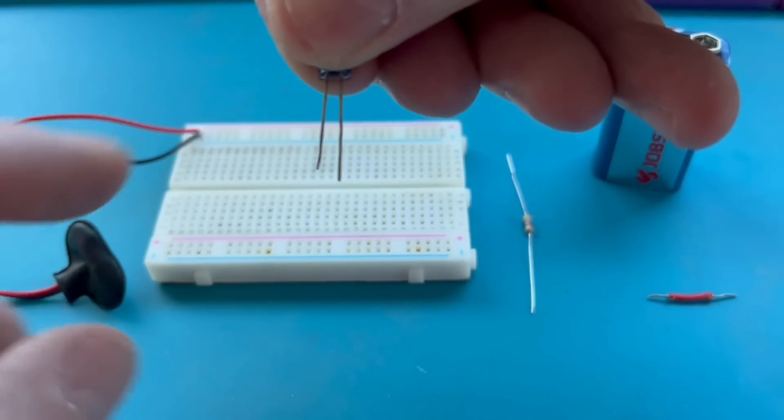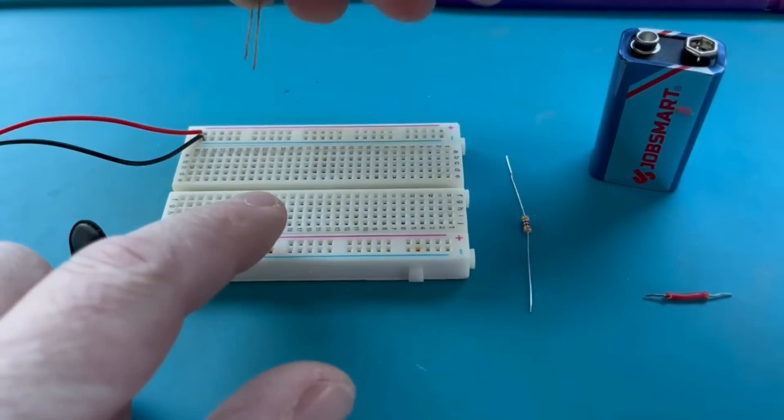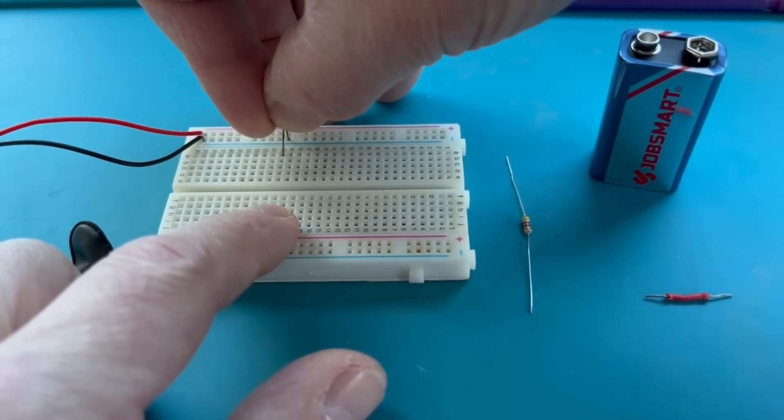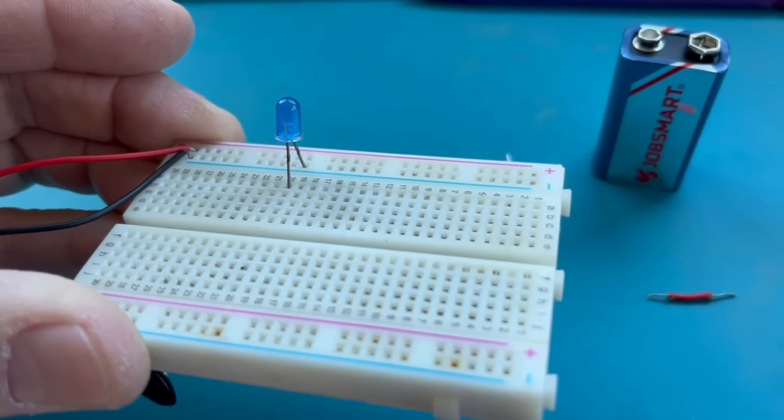In this case, the short leg here, that's called a cathode. We want to put that towards the negative or the ground side or the ground rail on our breadboard. So we'll pop them down there. You can see the cathode's towards the ground rail.